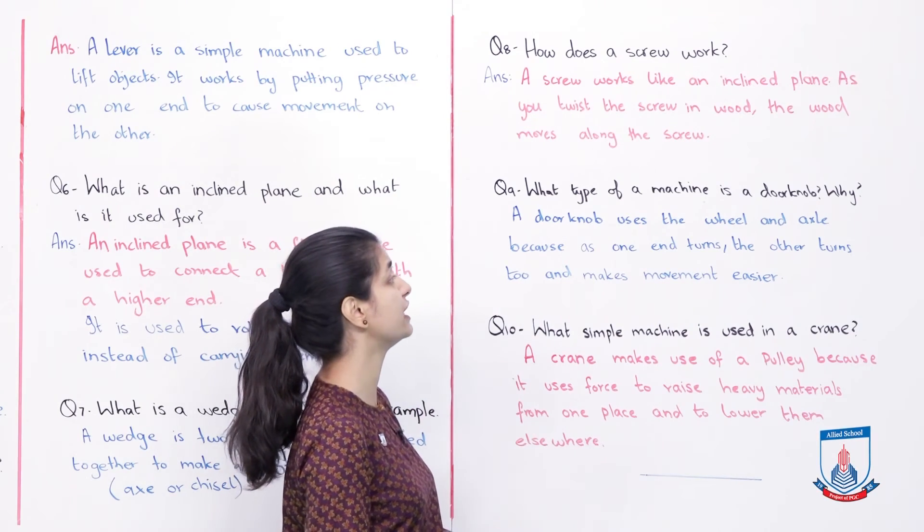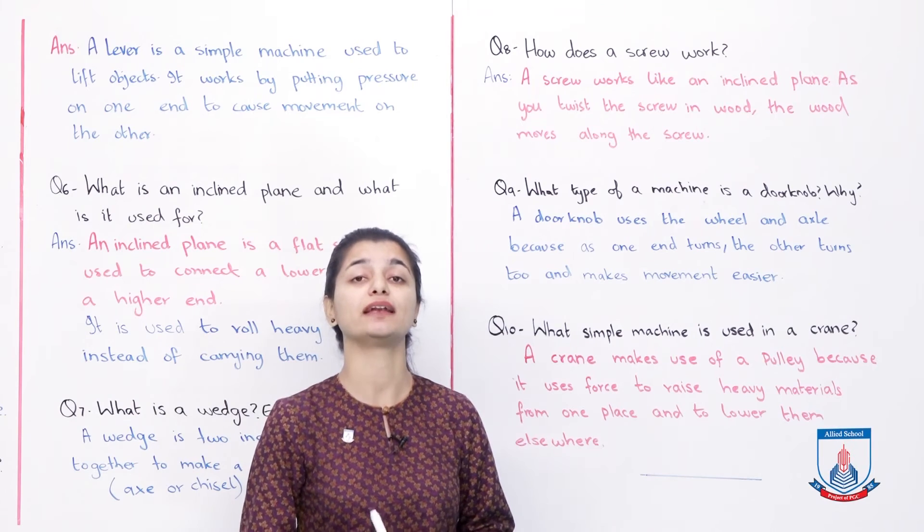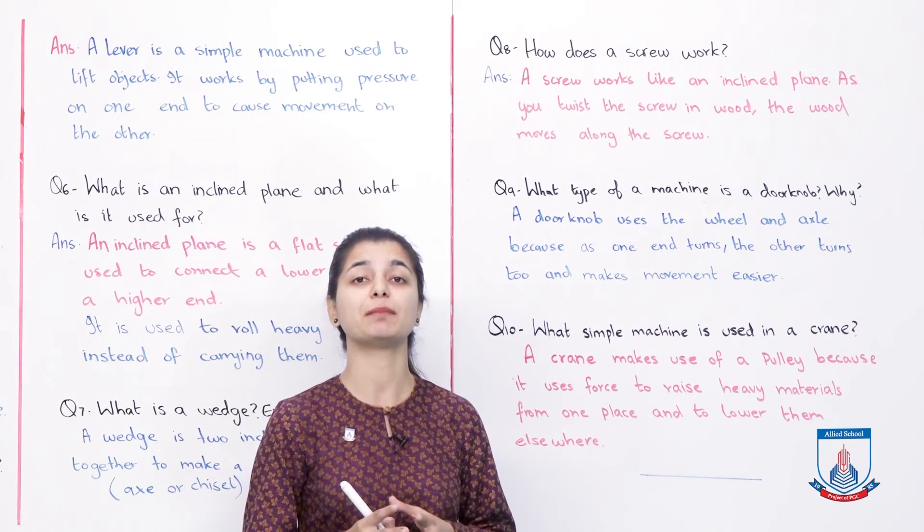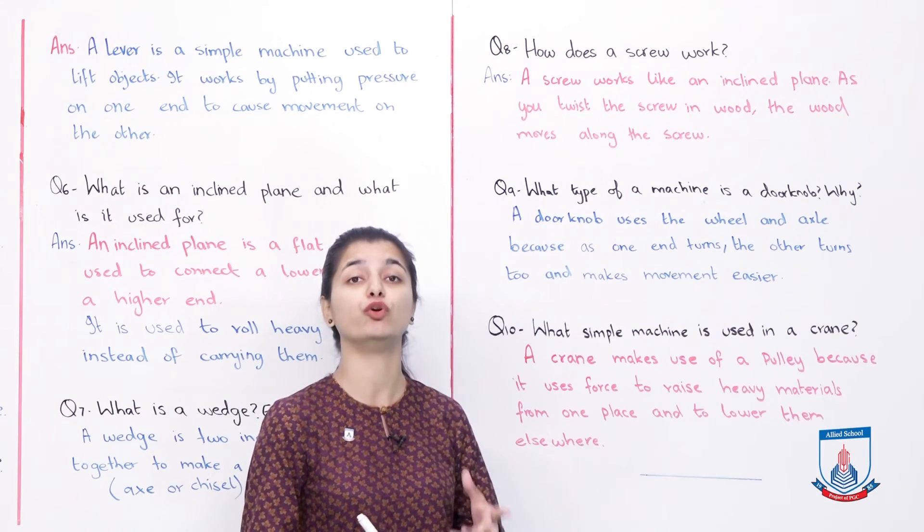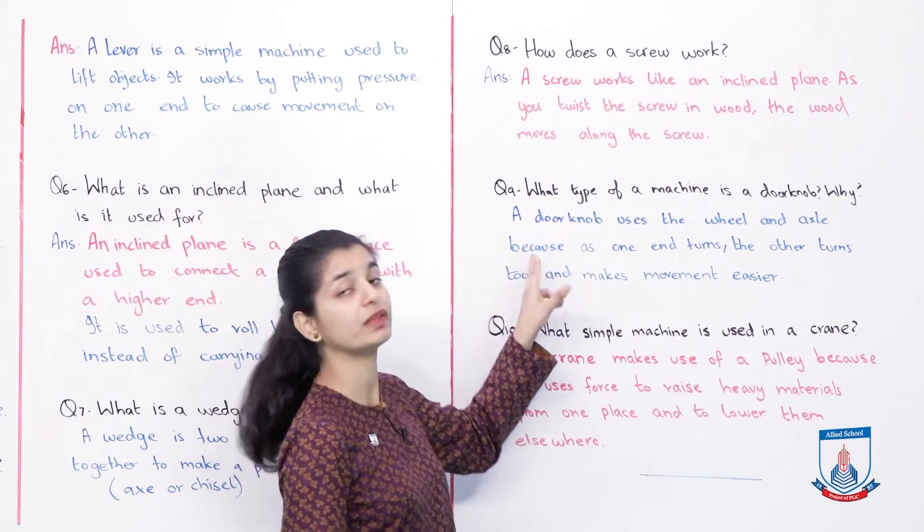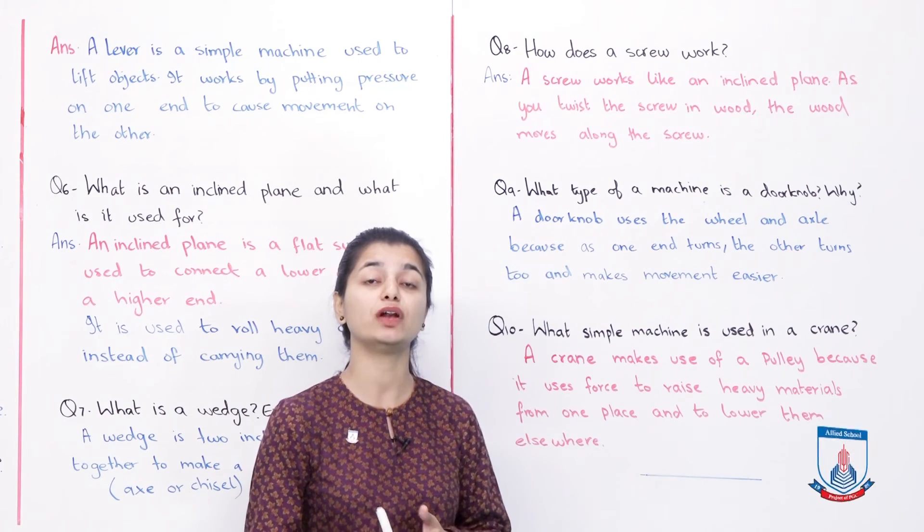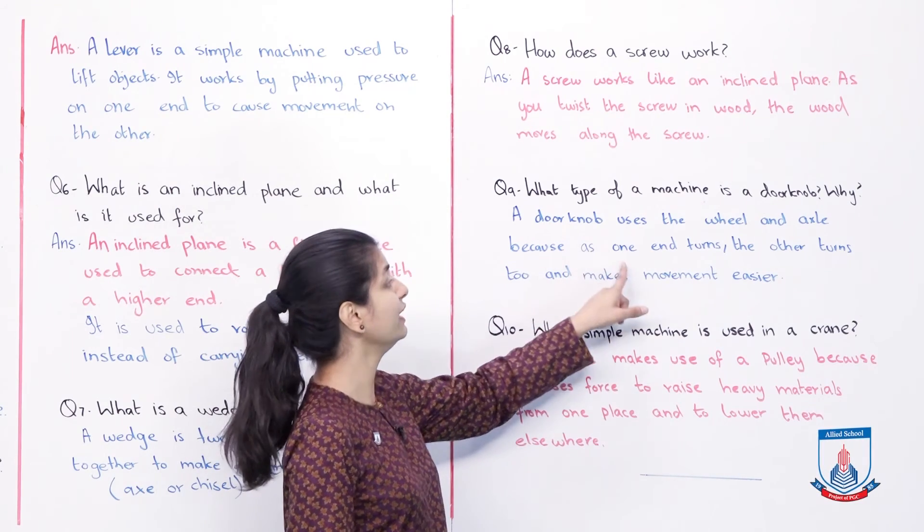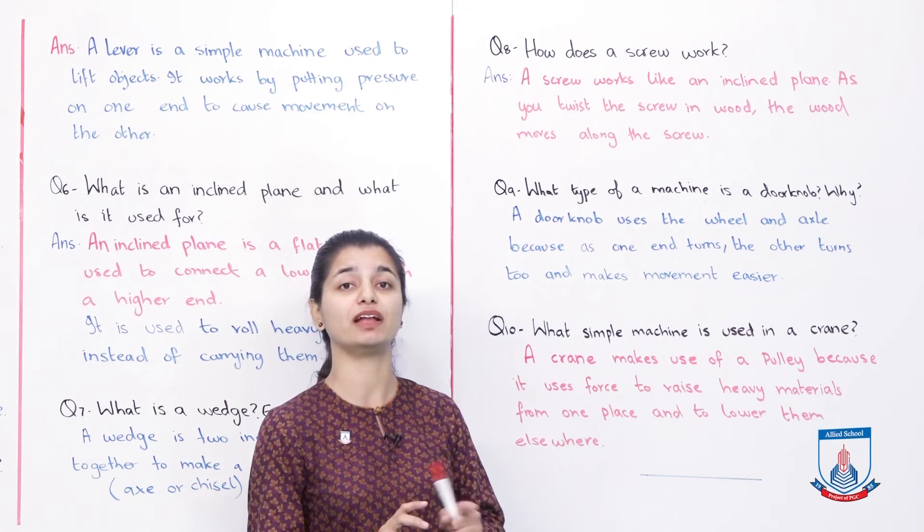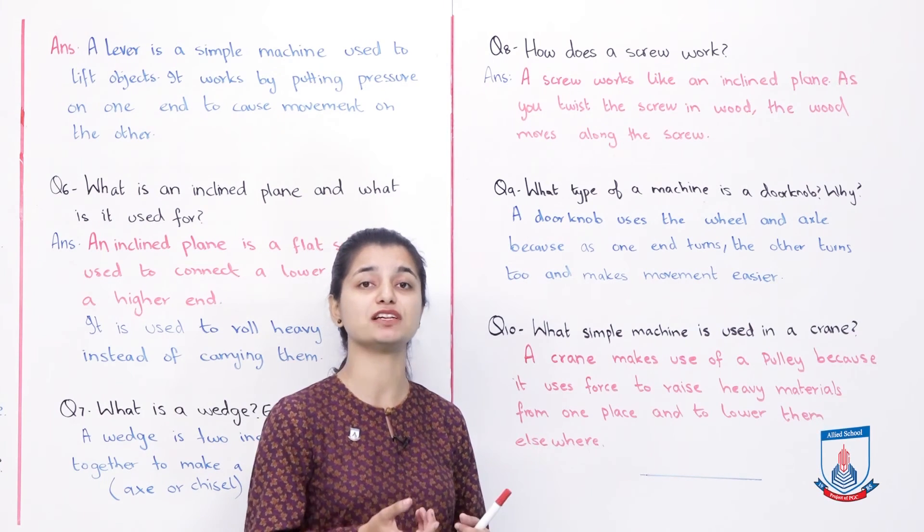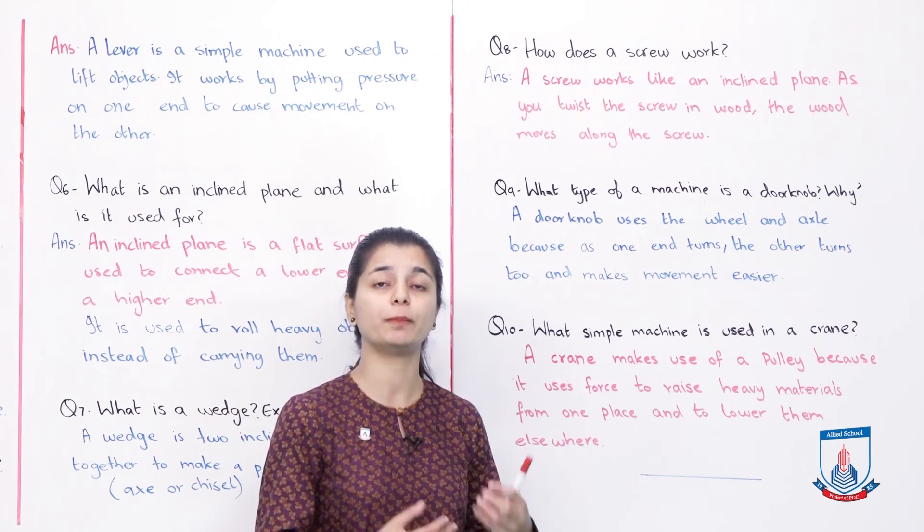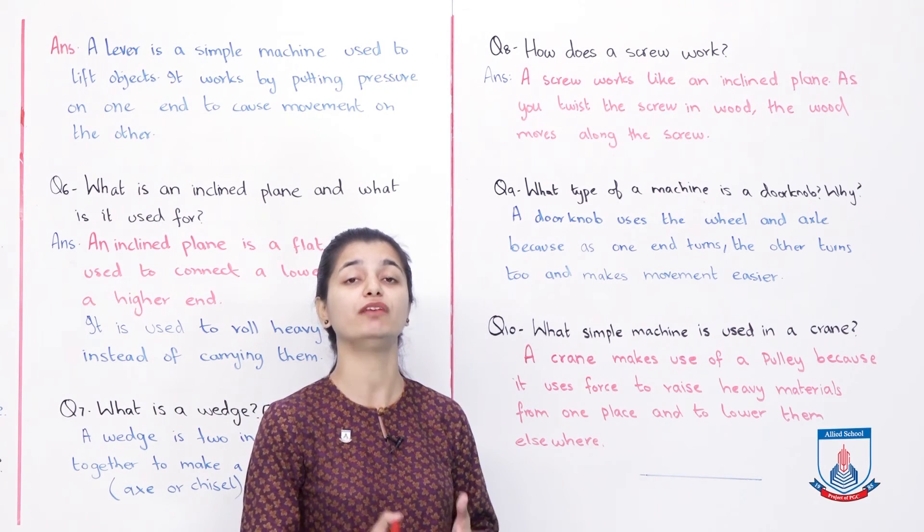Question 9: What type of machine is a doorknob? Why? A doorknob uses the wheel and axle principle. As one end turns, the other end turns too and makes movement easier. When you turn the doorknob on one side, the lock is removed on the other side and you can open the door easily.